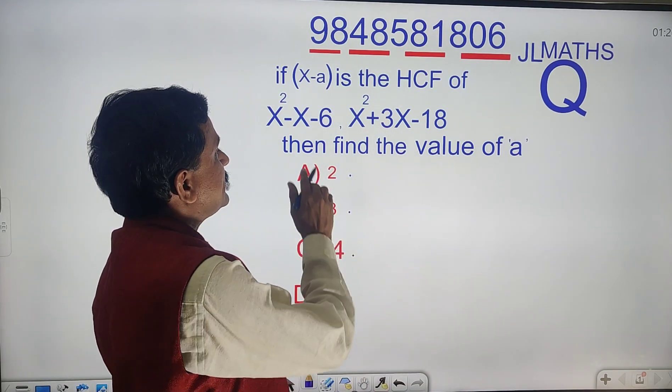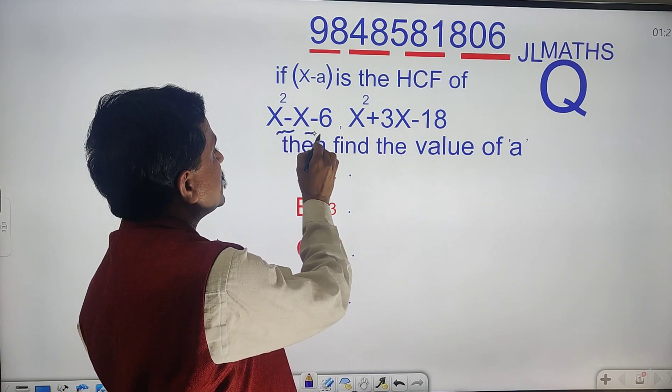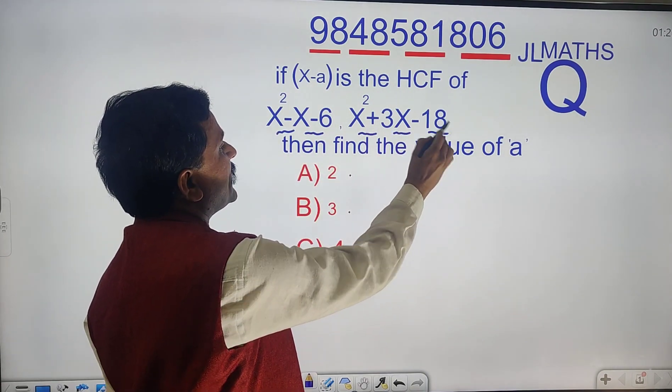The value of x in x square minus x minus 6 and x square plus 3x minus 18.